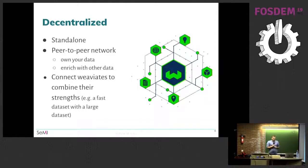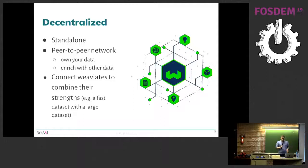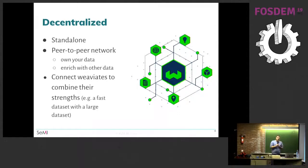You can also connect several VV8 instances to combine their different advantages. For example, one VV8 might be built to be very fast with an in-memory database — nothing stored on disk, super fast. But you might have another dataset so large that you can't do that. By having a decentralized setup you could combine those two VV8 instances to have the best of both worlds.